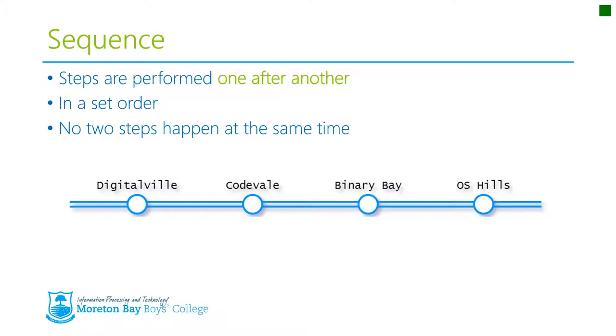We know that Binary Bay comes after Codevale, we know that Digitalville comes first, and the train will go along that line and execute or go to each one of those stops. That's how sequence programming happens. It will start at the beginning, go through each individual step until it gets to the end. No deviation, no change.